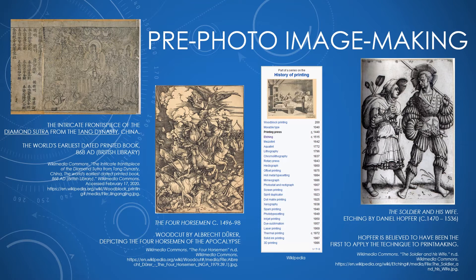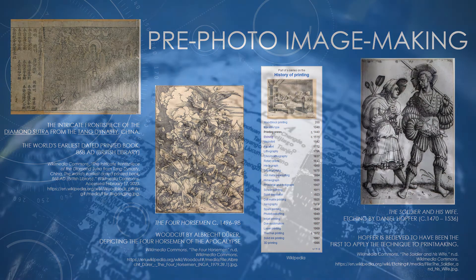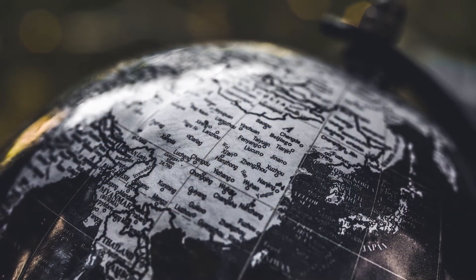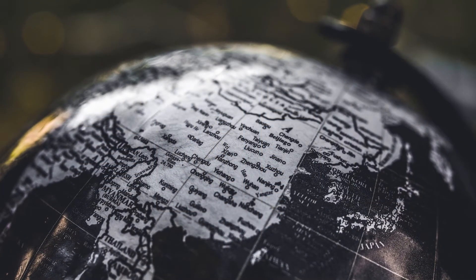On the right we have The Soldier and His Wife, which is an etching by Daniel Hopfer. Etching is when you take a metal plate, coat it in wax or resin, carve your image into it, then dip it in acid to eat away the metal. The eaten areas hold ink, which you then print. Before photography it would have been difficult to make an image if you weren't already an artist or didn't have access to these resources.